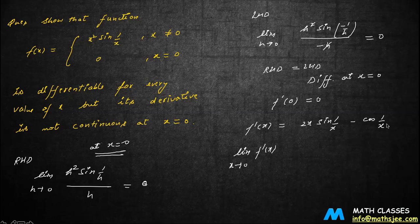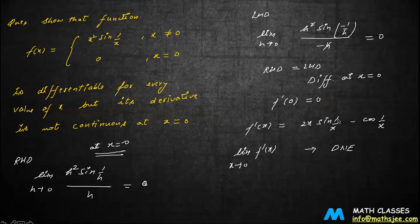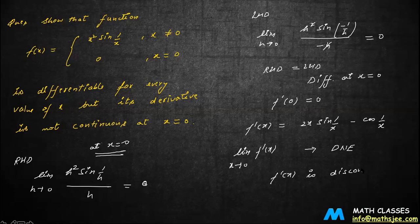When we apply the limit, the 2x·sin(1/x) part tends to 0, but the cos(1/x) part is oscillatory — it does not have a defined value as x tends to 0. So overall the limit does not exist. The value of the derivative at 0 exists (it is 0), but since the limit does not exist, we conclude that f'(x) is discontinuous at x equal to 0.